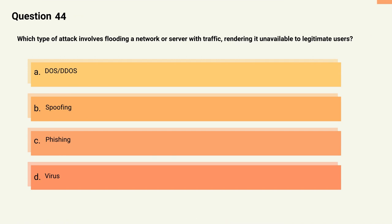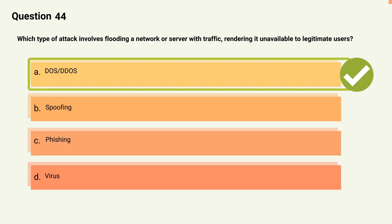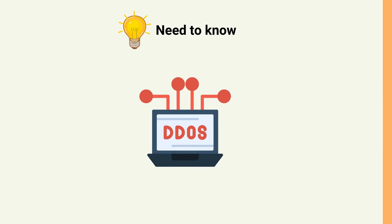Question 44: Which type of attack involves flooding a network or server with traffic, rendering it unavailable to legitimate users? Options: A) DoS/DDoS, B) Spoofing, C) Phishing, D) Virus. The correct answer is Option A, DoS/DDoS. Explanation: The attack is aimed at disrupting services and making them unavailable to users.